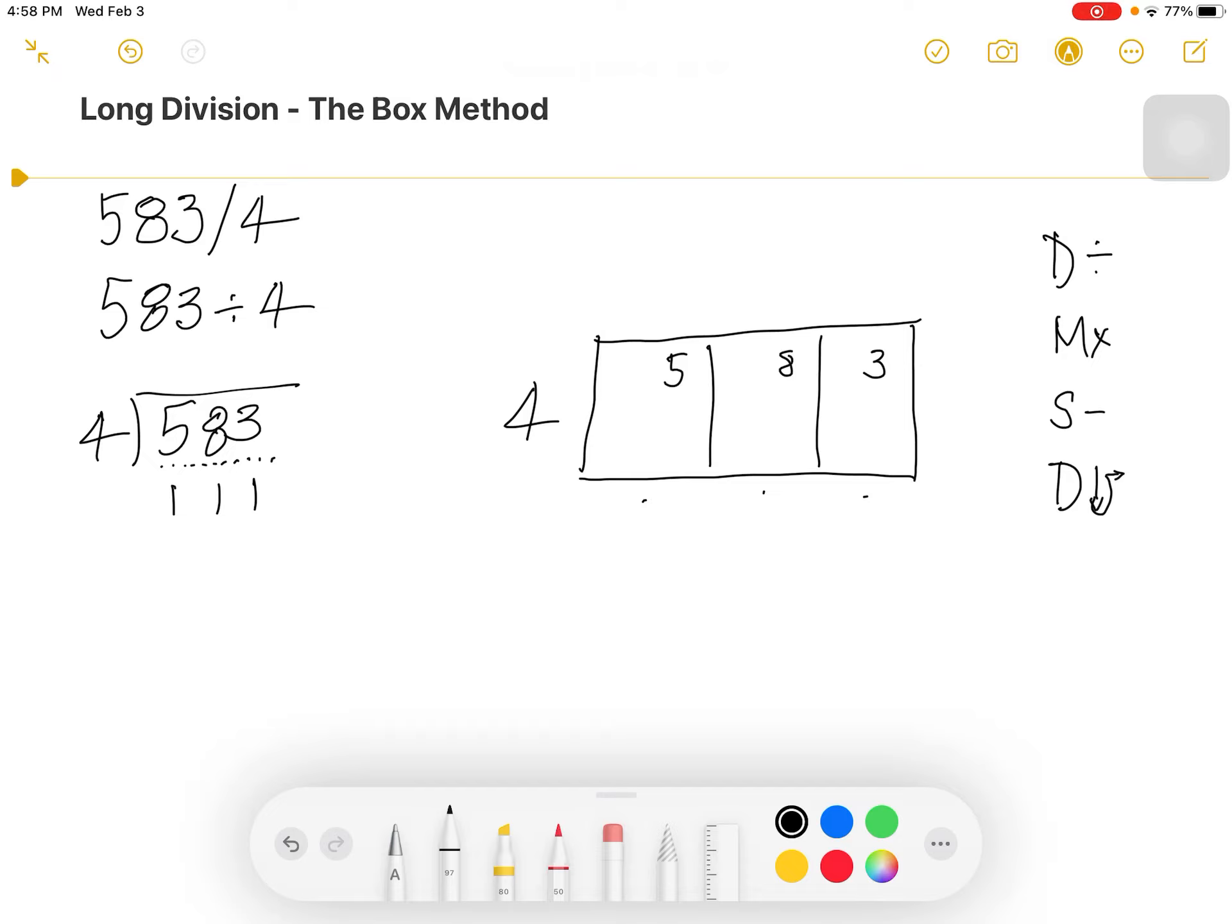So we start at the beginning. We divide. 4 divided into 5 is 1. 1 times 4 is equal to 4. And then we subtract. 5 take away 4 is 1. And then we drag and drop. We will drag our remainder number over to make it 1.